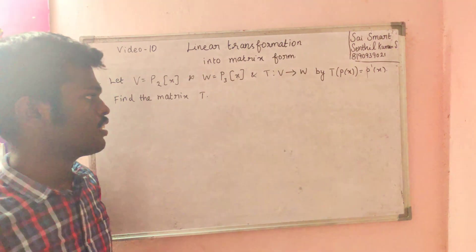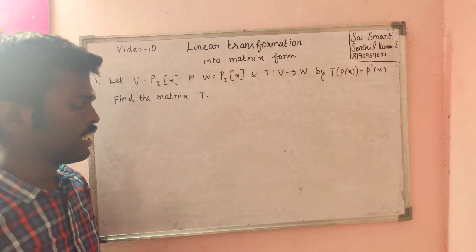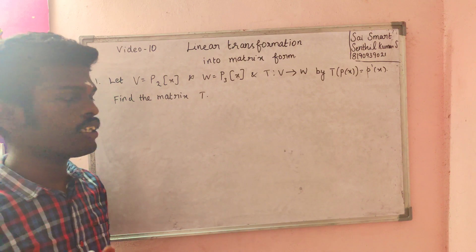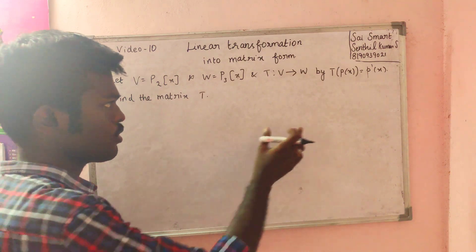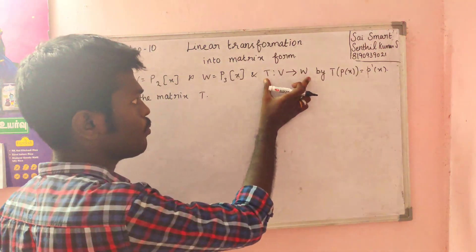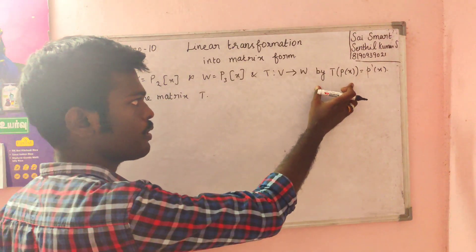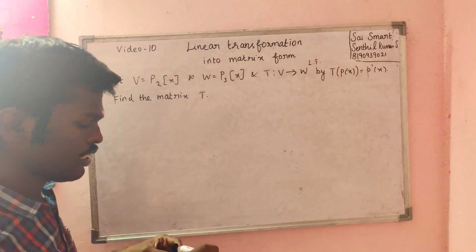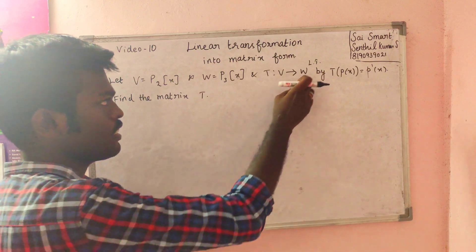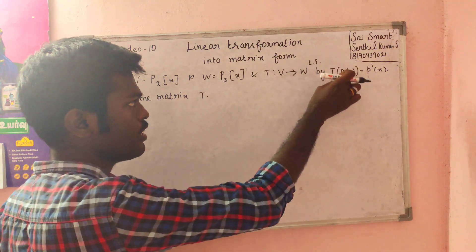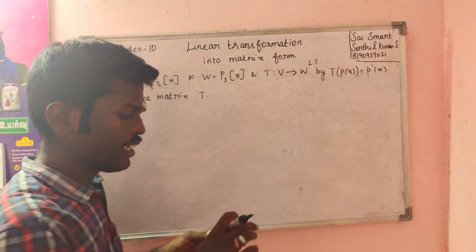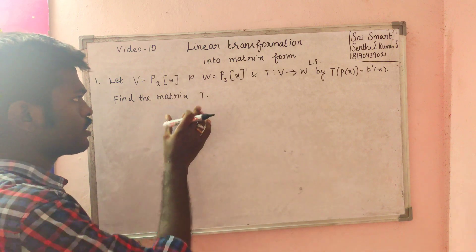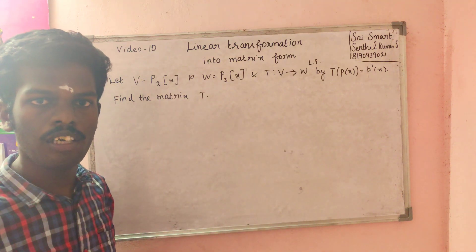Welcome to the channel. In this video, I am going to talk about linear transformation into matrix. That is, a transformation T from V to W is a linear transformation, defined by L_T, where T of P of x is equal to P dash of x.